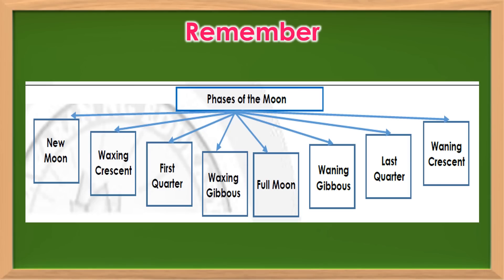Grade 5 learners, remember this. There are 8 phases of the moon: new moon, waxing crescent, first quarter, waxing gibbous, full moon, waning gibbous, last quarter, and waning crescent.